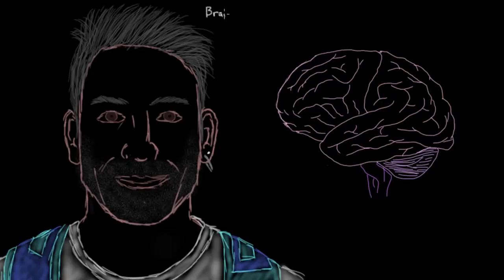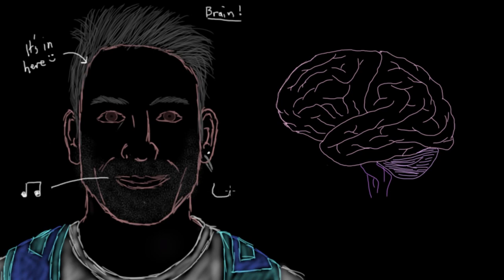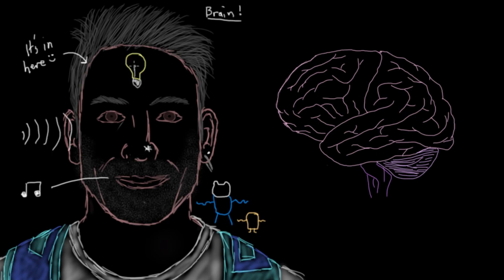Your brain is the most complicated structure in your body. It sits inside your head, protected and housed by your skull, and it's made up of billions and billions of neurons or brain cells. All these neurons are interconnected in a really intricate way that allow you to do things like sing, dance, hear things, smell things, and to think and learn.